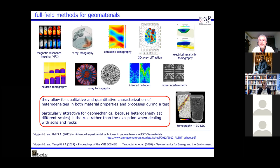Whenever we talk about full-field methods in geomechanics and geomaterials, the amount of available methods is impressive — magnetic resonance imaging, ultrasonic tomography, diffraction, infrared radiation, interferometry, electrical resistivity, and many more. All these methods allow for characterizing heterogeneities: both heterogeneities in material properties and, more interestingly, heterogeneities in the processes that develop during a test — both qualitatively and quantitatively.